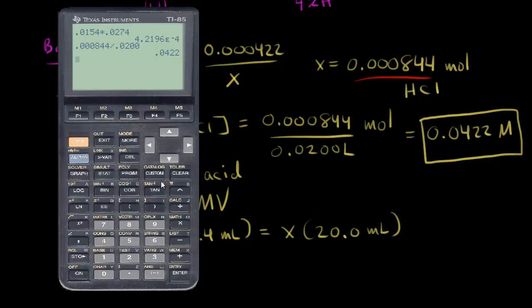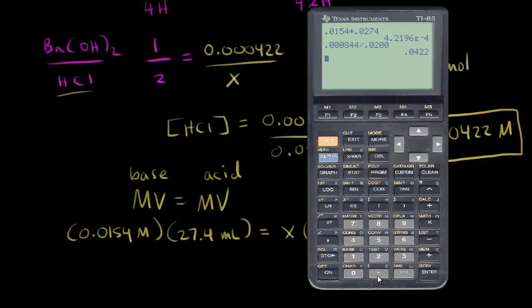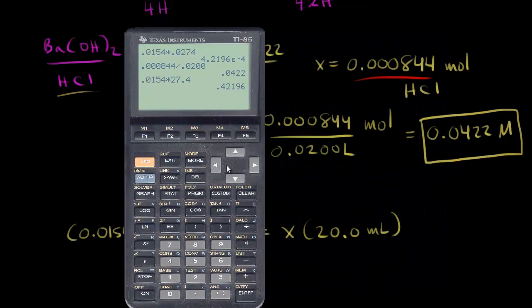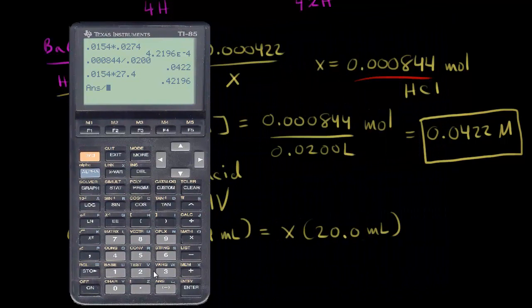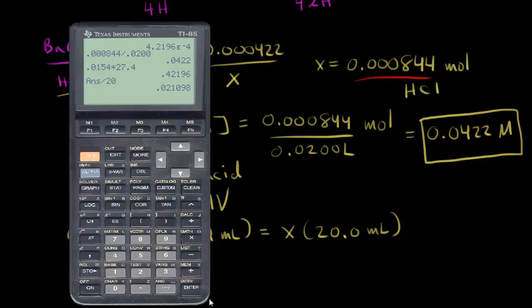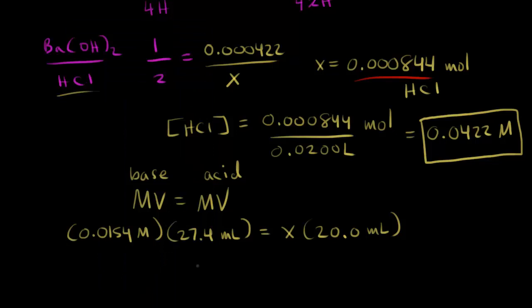So let's do that calculation. So trying to use the shortcut way, 0.0154 times 27.4 gives us that number. Divide by 20. So we get 0.0211. So for our answer for x, we get 0.0211 molar. And so you can see that's not the correct answer. Here we got a concentration that's half of the concentration that we got when we did it the longer way.